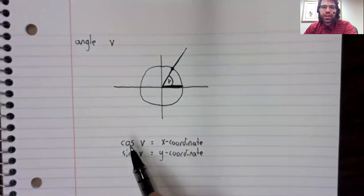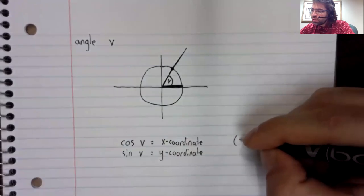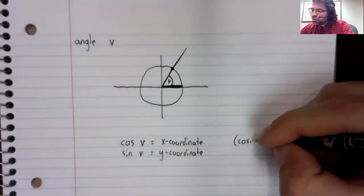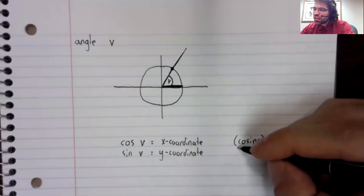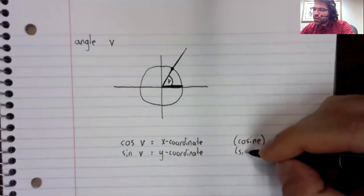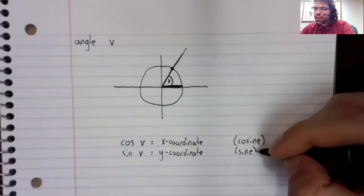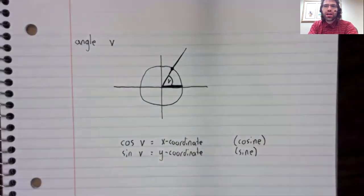they're abbreviated cos and sin. But let me write down the full names of the functions as well: the cosine and the sine.